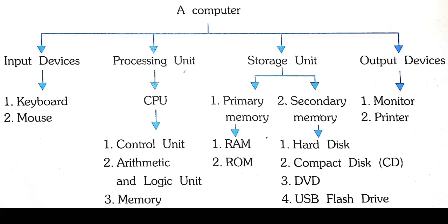The last concept of this video is components of a computer. All the computer machinery that we can use, see, and touch is called hardware. Hardware means we can touch and feel it. Devices or components like the keyboard, mouse, monitor, printer, and the CPU box are computer hardware. A computer is made up of components used for input, processing, storage, and output. The components of a computer are: input devices, processing unit, storage unit, and output devices.